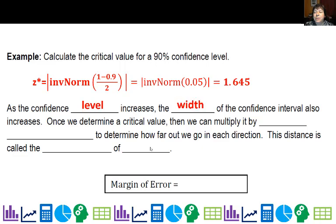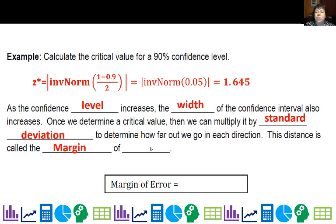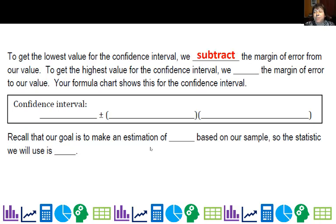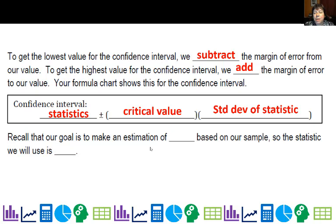As the confidence level increases, the width of the confidence interval also increases — the more confident you want to be, the bigger a net you cast. Once we determine a critical value, we multiply it by the standard deviation to figure out how far we need to go in each direction for our interval. This distance is called the margin of error: it's your z-star, your critical value, times your standard deviation. To get the lowest value of the confidence interval we subtract the margin of error from our estimate and to get the highest we add it. The formula chart shows this as: statistic plus or minus critical value times the standard deviation of the statistic.